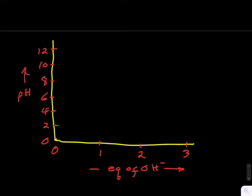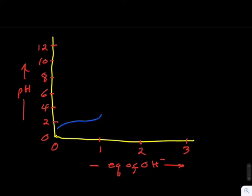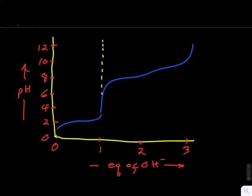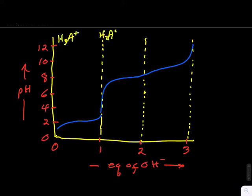Cysteine requires 3 equivalents of base for its titration, as shown here. We can drop vertical dashed lines to indicate the equivalence points, and we can write the predominant forms of cysteine across the top of our plot, as shown. H3A plus is the predominant form on the left side of the titration, and A minus minus is the predominant form at the third equivalence point.